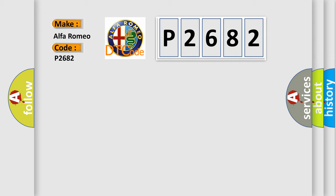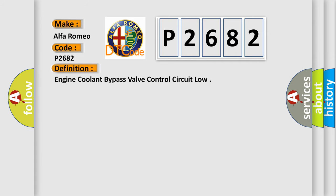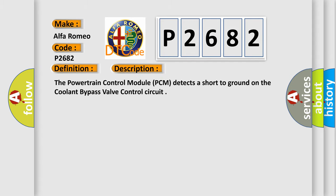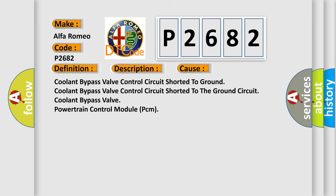For Alfa Romeo vehicles, the basic definition is: Engine Coolant Bypass Valve Control Circuit Low. The Powertrain Control Module (PCM) detects a short to ground on the Coolant Bypass Valve Control Circuit. This diagnostic error occurs most often in these cases: Coolant Bypass Valve Control Circuit shorted to ground, Coolant Bypass Valve Control Circuit shorted to the ground circuit, or a fault in the Coolant Bypass Valve or Powertrain Control Module (PCM).